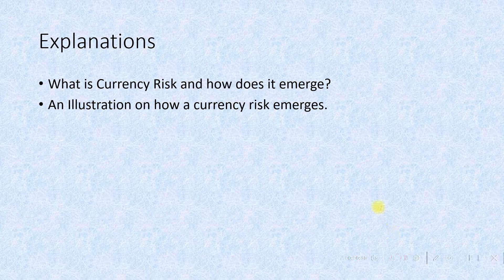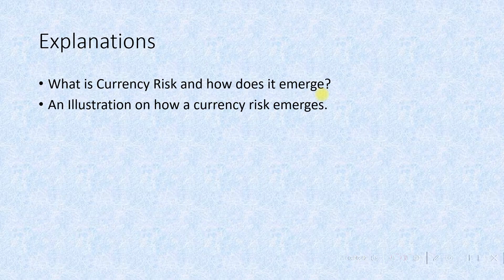What is currency risk and how does it emerge? From the relative valuation of currencies emerges currency risk, where changes result in unpredictable losses or gains involving investments, profits and dividends converted into foreign currencies. Investors reduce currency risk by using hedges, which are designed to offset many currency-related losses or gains.